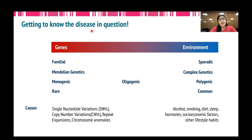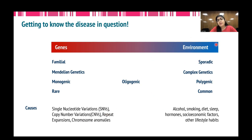The next factor is the disease in question. After diagnosis has been made, one should clearly understand the disease — whether its cause is genetic or mostly environmental. Genetic diseases tend to be more familial, involve Mendelian genetics, are mostly monogenic or oligogenic, and are rare diseases. Their causes can be single nucleotide variations, copy number variations, repeat expansions, and chromosomal anomalies. Environmental disorders are mostly sporadic, involve complex polygenic genetics, are fairly common in the population, and are caused by factors such as alcohol, smoking, diet, sleep, hormones, socioeconomic factors, and other lifestyle habits.